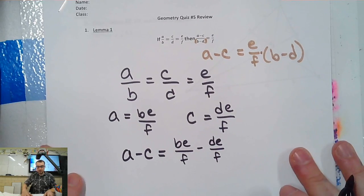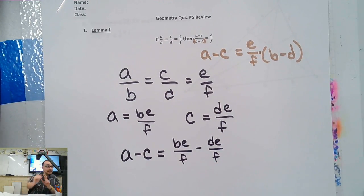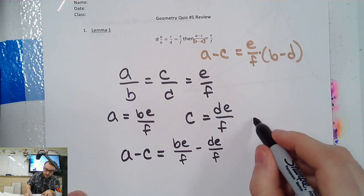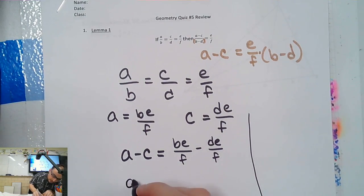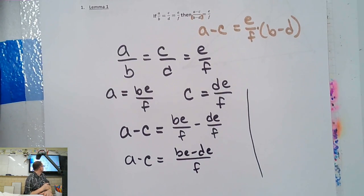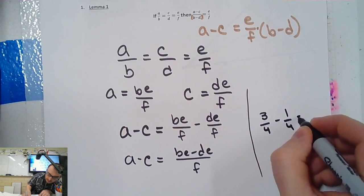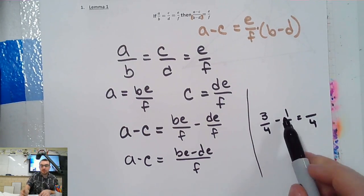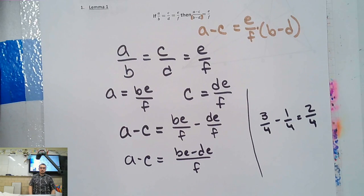Before I do this, I'm going to show you what's happening here — common denominators. If I had something like three quarters minus one quarter, I'd keep the denominator and subtract the numerators. So I'm going to keep the denominator and subtract the numerators. Totally valid — if they have the same denominator, I can do that.